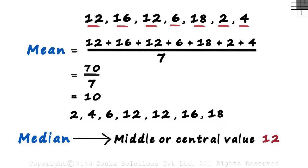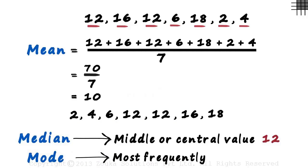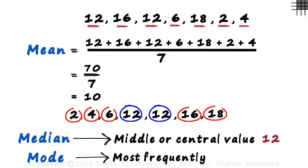And the third concept is that of a mode. It is the value that occurs more frequently. In our list, we can see that 12 occurs twice and all other numbers occur just once. So the mode of this set of values is 12.